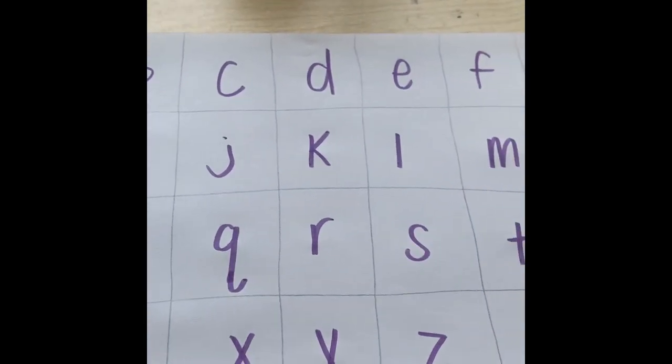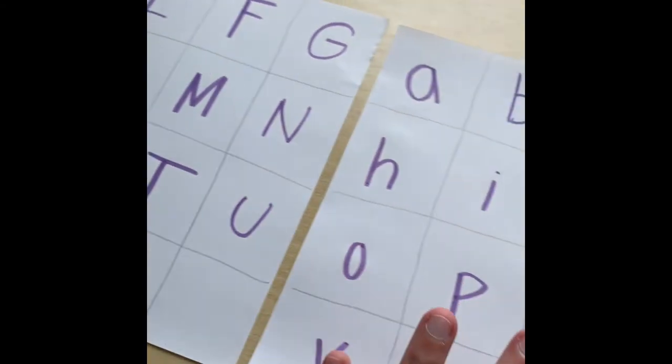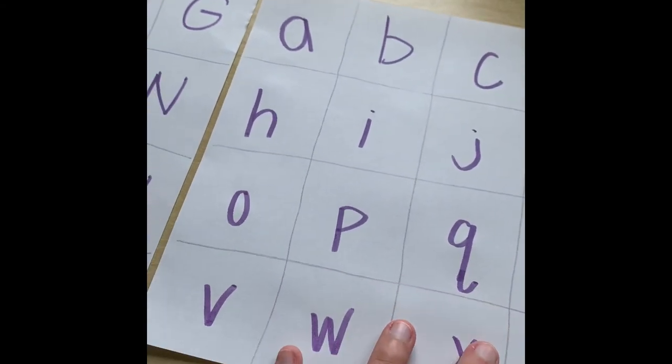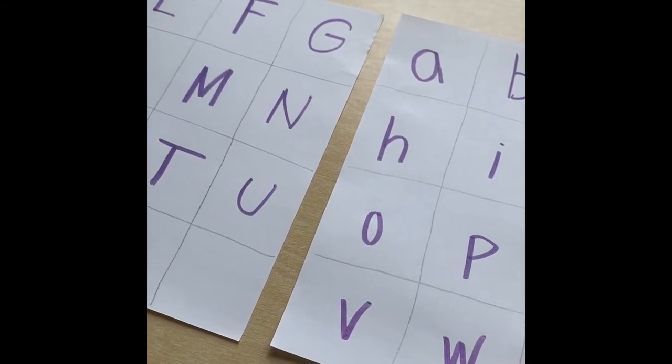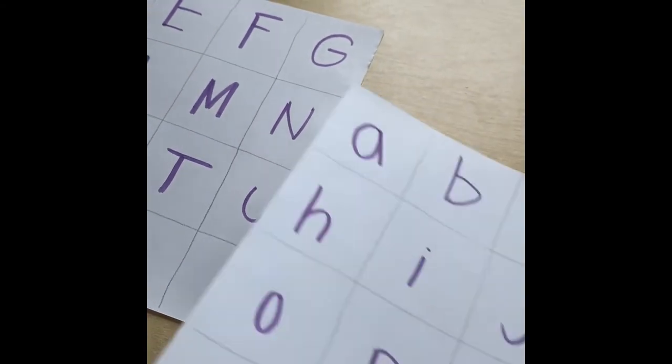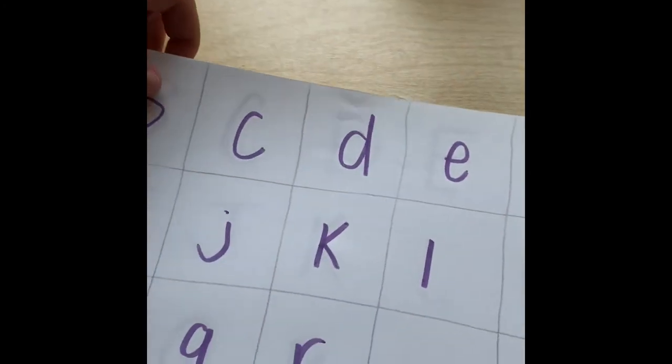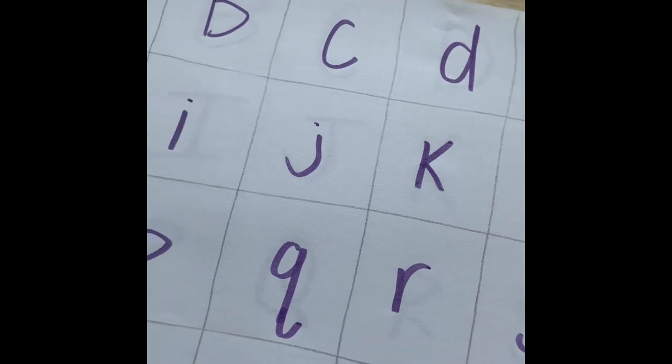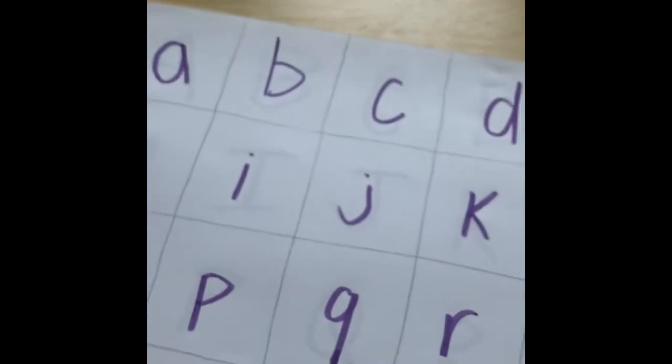Another thing you can do if you have older kids is you can do uppercase cursive and lowercase cursive. But for right now, we are just going to stick to straight print. An easy way to cut it out would be to put one paper on top of the other, and then make sure they're lined up. And then you're going to just cut straight across, and then cut that way straight across.